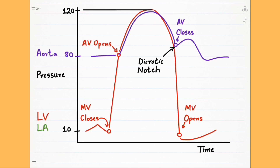Also note that the aortic pressure curve should closely follow the left ventricular curve. Ideally, there should be no space between the two from the point of aortic valve opening to where it closes. Knowing this will help us when we talk about the pressure curve in aortic stenosis. I have drawn the two curves apart so it's easier to see what's going on inside the aorta and the left ventricle as the cardiac cycle moves on.